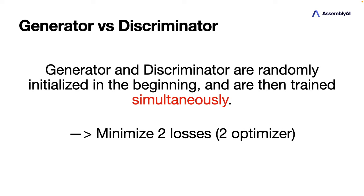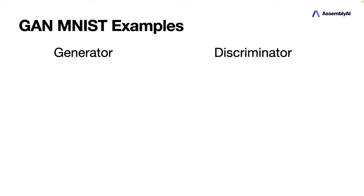We use the binary cross entropy loss. I won't go into detail about the loss formula here, but I'll link another resource below the video if you want to learn more. This is basically the whole concept. Before we jump to the code, let's look at an example. Later we use the MNIST dataset, so the generator tries to generate MNIST images — the digits from zero to nine — and tries to trick the discriminator.